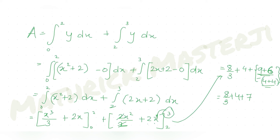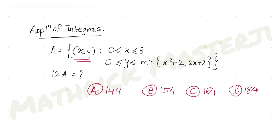So A equals 8/3 plus 4 plus 7 equals 8/3 plus 11. Converting: (8 plus 33) over 3 equals 41 over 3. Therefore, 12A equals 12 times 41 over 3 equals 4 times 41 equals 164.